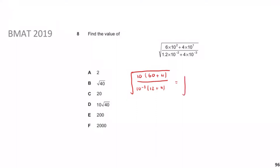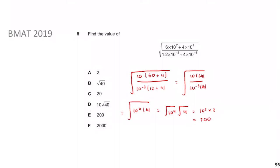Following up with my square root and simplifying, I get 10 times 64 over 10⁻³ times 16. Simplifying further: 10 divided by 10⁻³ — when you divide powers you subtract them, so it's 1 minus (−3) = 4, giving 10⁴. And 64 divided by 16 is 4. So I have the square root of 10⁴ times 4, which is 10² times 2, giving 200.